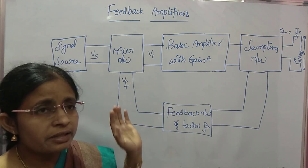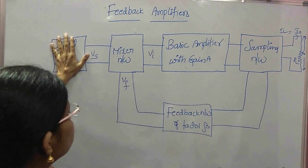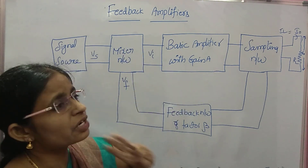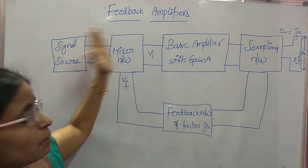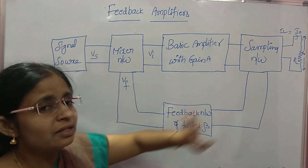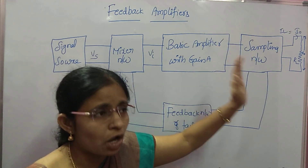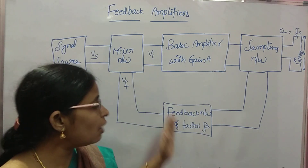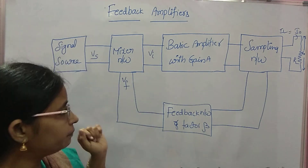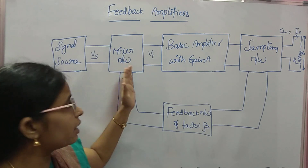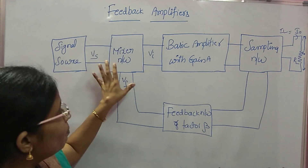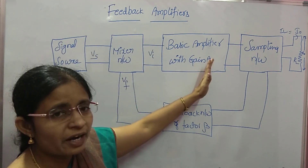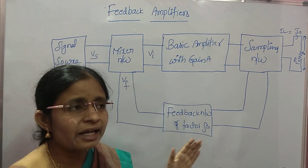If this amplifier is not having any feedback, the block diagram consists of only three things: signal source, amplifier, and RL. But to connect feedback to your basic amplifier, you have to use three extra networks: sampling network, feedback network, and mixer network. This is the complete block diagram of your feedback amplifier.